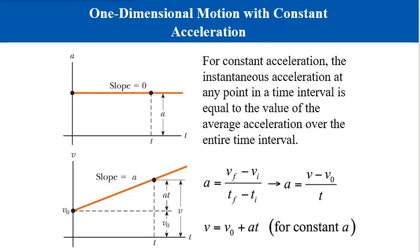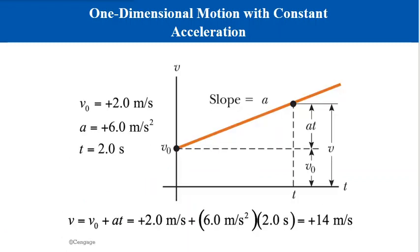We're going to derive equations as we get into this topic. For example, we have a car moving with an initial velocity of 2.0 m/s that accelerates to the right at 6.0 m/s² for 2.0 seconds. Plugging in the numbers, we find that the final velocity after 2 seconds is positive 14.0 m/s. The velocity changes linearly with time under constant acceleration.